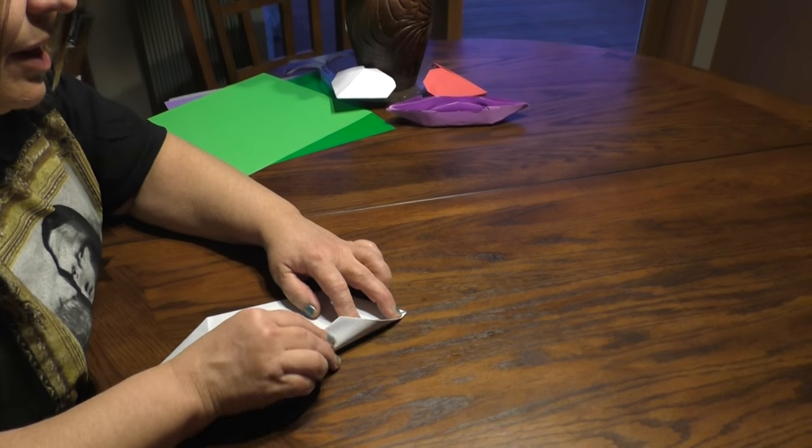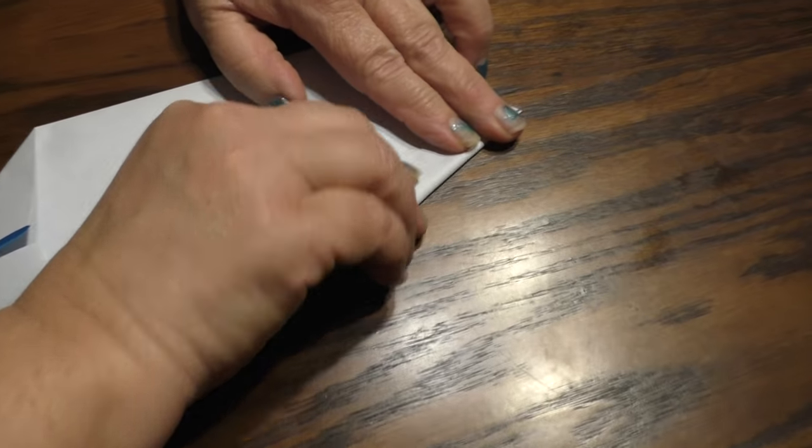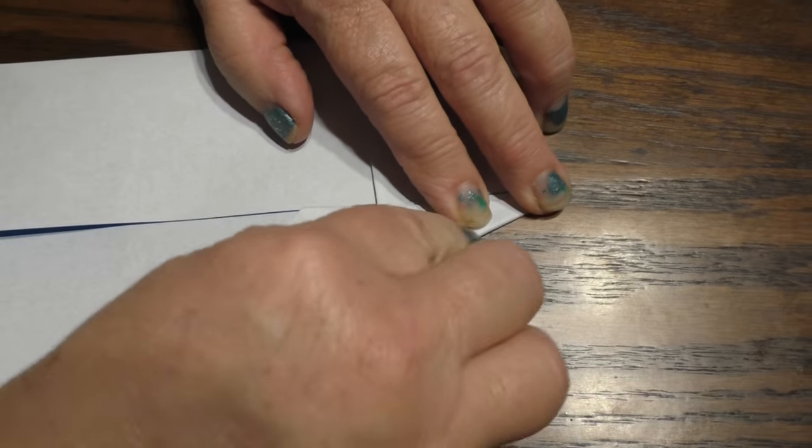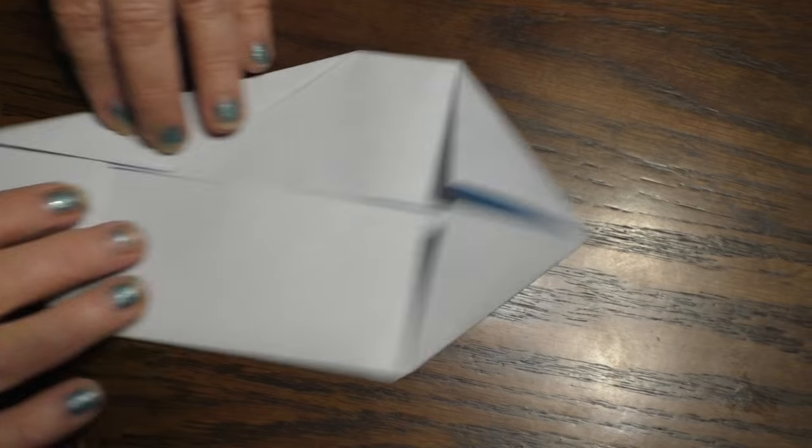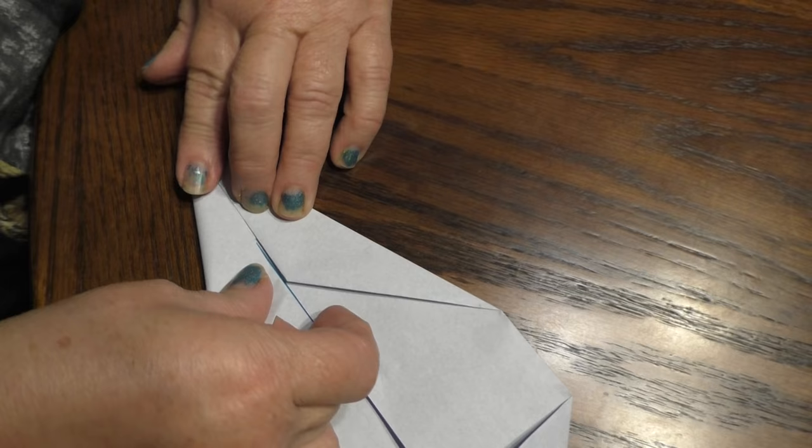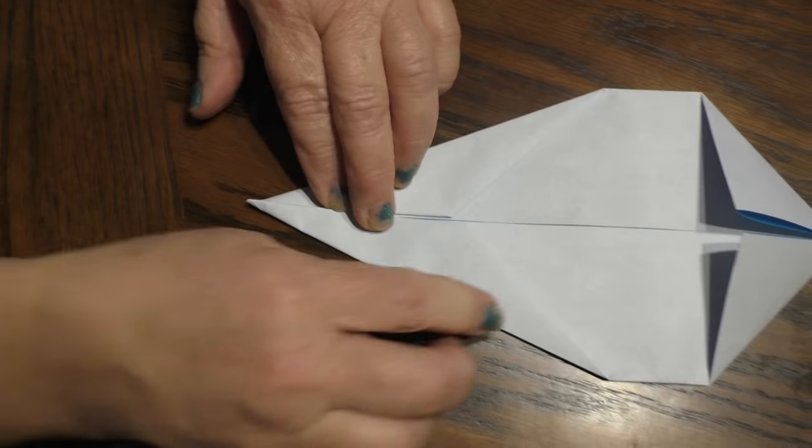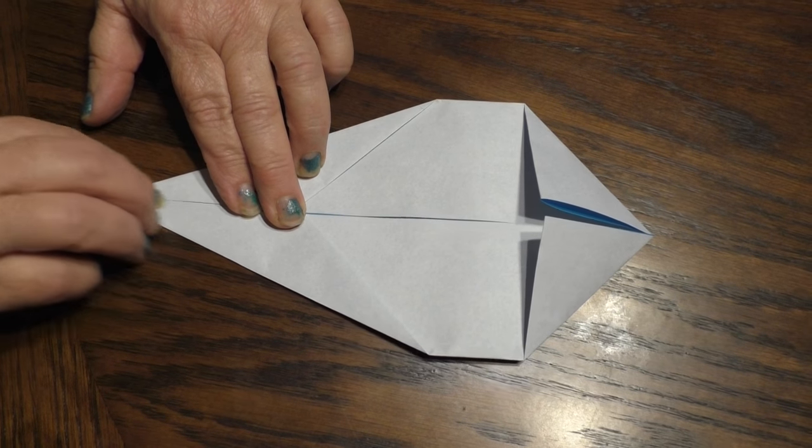then we go back to the top again and line the top up. For those of you that know how to fold paper airplanes, this is going to be an easy fold. Make sure it's nice and crispy crease.